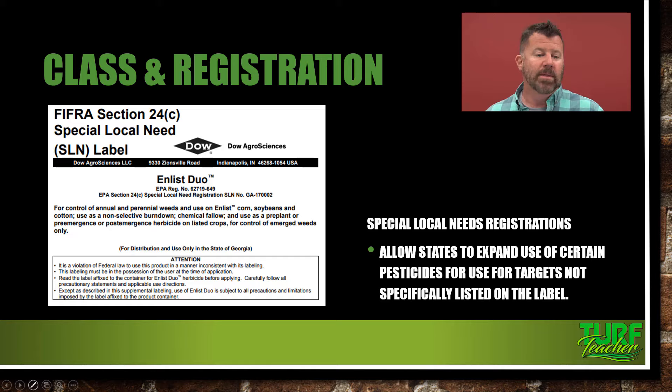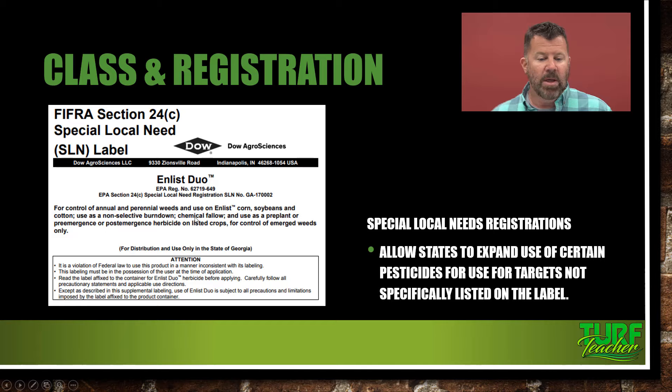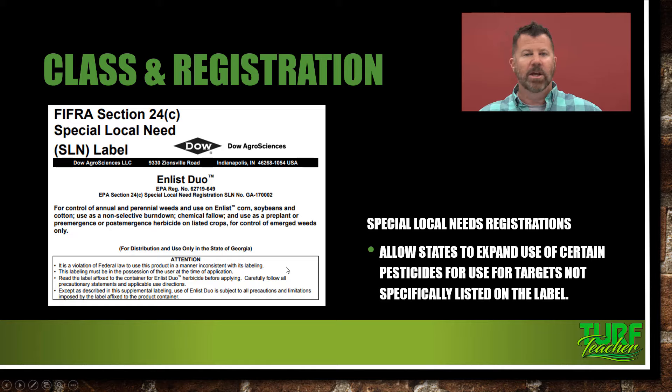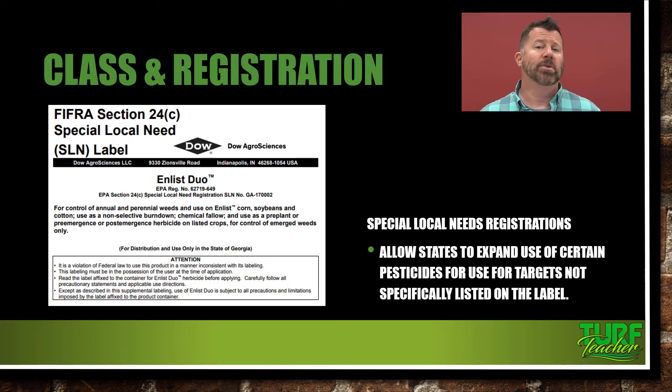Let's look at the special local need label here — Enlist Duo, for control of annual and perennial weeds and use on Enlist corn, soybeans, and cotton, used as a non-selective burndown chemical and as a pre-plant, pre-emergent, or post-emergent herbicide on listed crops. Now, this is for distribution and use only in the state of Georgia. But in North Carolina, if we have a situation and know this is going to work, we can get that special local needs permit and use the FIFRA Section 24C special local needs label.